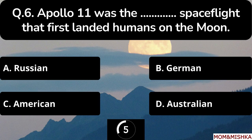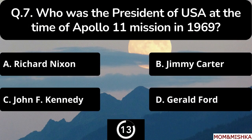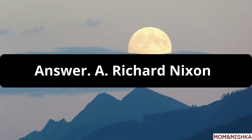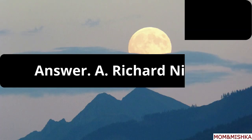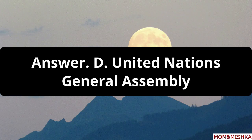Apollo 11 was the blank spaceflight that first landed humans on the moon — the answer is option C: American. Who was the president of USA at the time of the Apollo 11 mission in 1969? The correct answer is option A: Richard Nixon. Which organization declared 20th July as International Moon Day? The answer is option D: United Nations General Assembly.